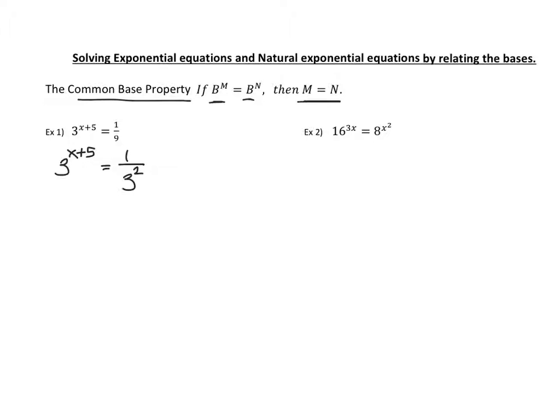We do have the 3s, but 1 over 3 is not the same as 3 being in the numerator. So we want to move our 3 squared up to the numerator, and we can do that by changing the sign of the exponent to negative 2. So 1 over 3 squared is the same as 3 to the negative 2. Now we have 3 and 3.